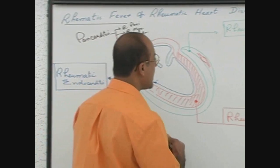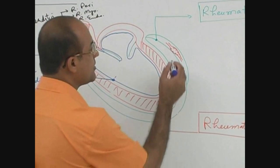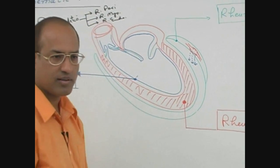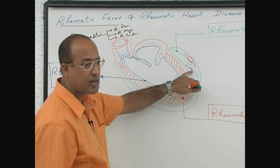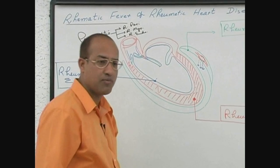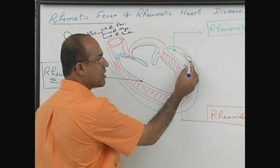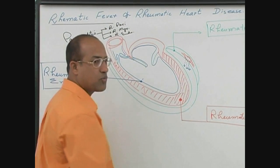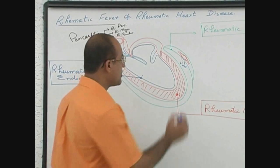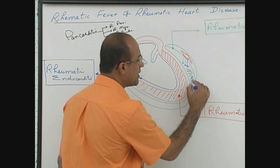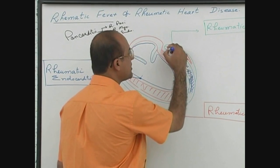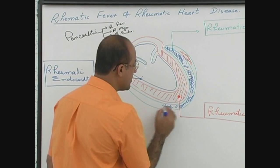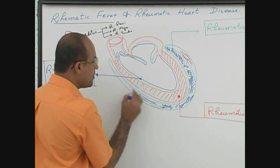Due to very large inter-endothelial gaps, there is leakage of very large protein molecules like fibrinogen. Fibrinogen is a protein produced by the liver, present in circulation in a globular and soluble form. When fibrinogen shifts from the vascular compartment to the pericardial sac, it polymerizes and converts into fibrin strands. This accumulation of eosinophilic material in the pericardium is called fibrinous pericarditis.